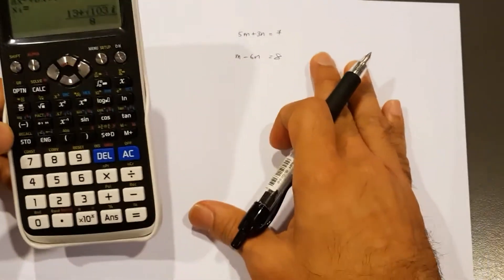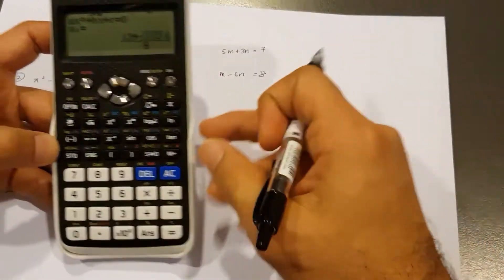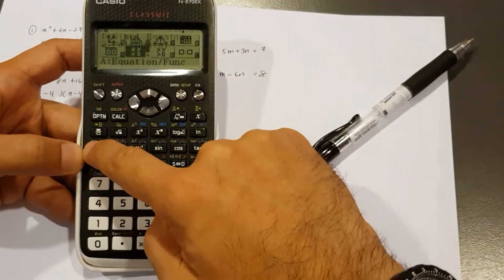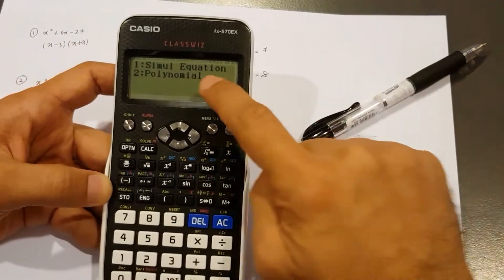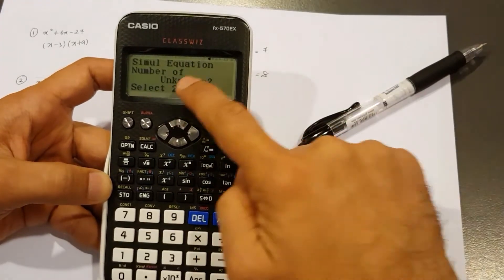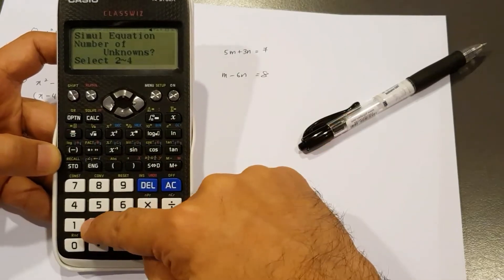Okay. Now as for the simultaneous solution, same equation we have here, but this time I'm going to tap menu again, alpha A once more, but this time we're looking for simultaneous equation. So that's number one, a number of unknowns will be two because I've got M and N. So I press two.